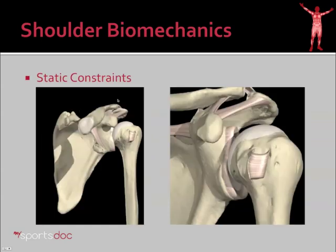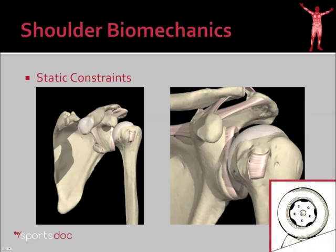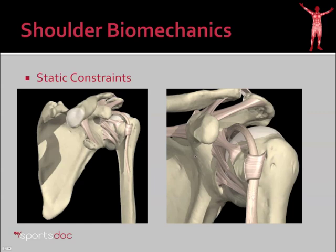That begs the question: what keeps the ball of the shoulder in the cup or on the cup? First we'll look at the static constraints. These are fairly limited. There's the labrum of the shoulder, which surrounds the glenoid or the cup of the shoulder and deepens it by about 50%. This acts as a chalk block that prevents the ball of the shoulder from sliding off the edge with low grade forces applied. Next we have the ligaments of the shoulder. These are fairly limited and they really only come into play at extremes of range of motion.